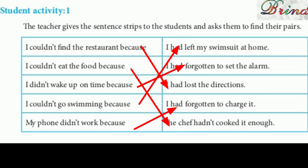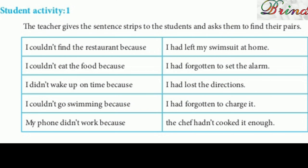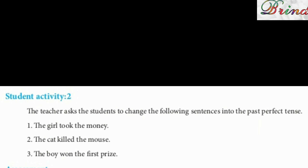There are two actions here. The phone not working is one action, and forgetting to charge it is another action. So when two actions come together in the past, we use 'had'.